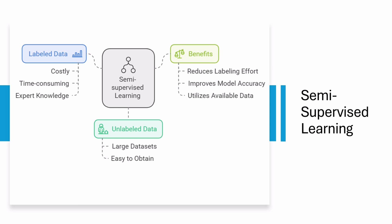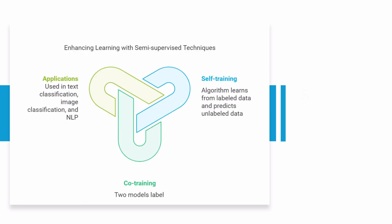This method is especially beneficial in situations where obtaining labeled data is costly, time-consuming, or requires expert knowledge. For example, in healthcare, only a few medical images may be labeled by specialists, but there are countless unlabeled images available. By leveraging the small amount of labeled data, the algorithm can learn to make predictions while using the larger pool of unlabeled data to enhance its understanding and improve accuracy.